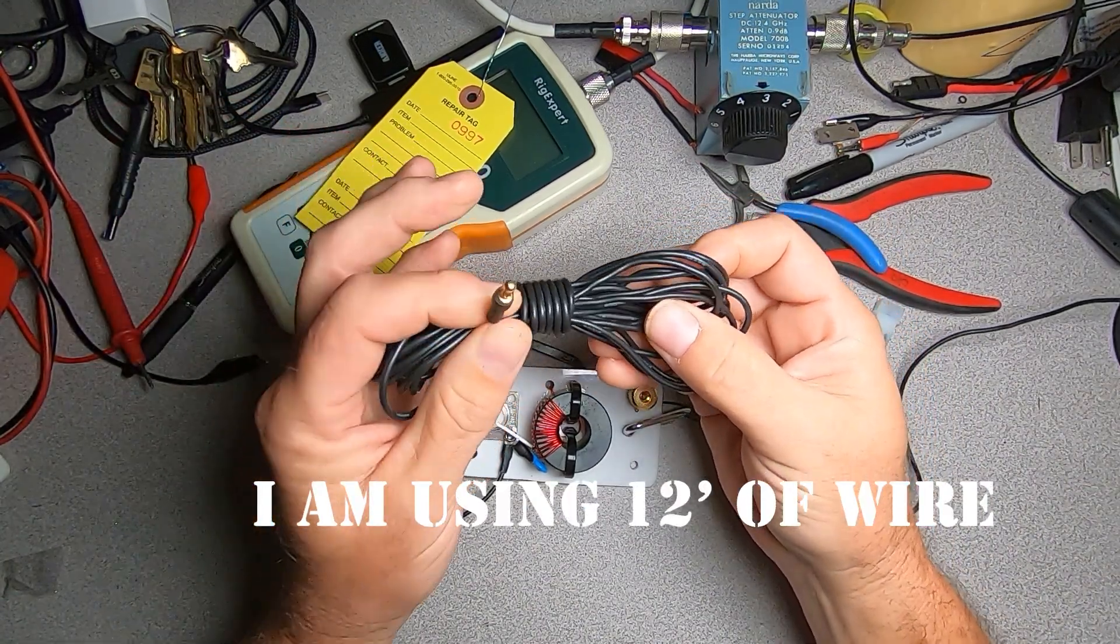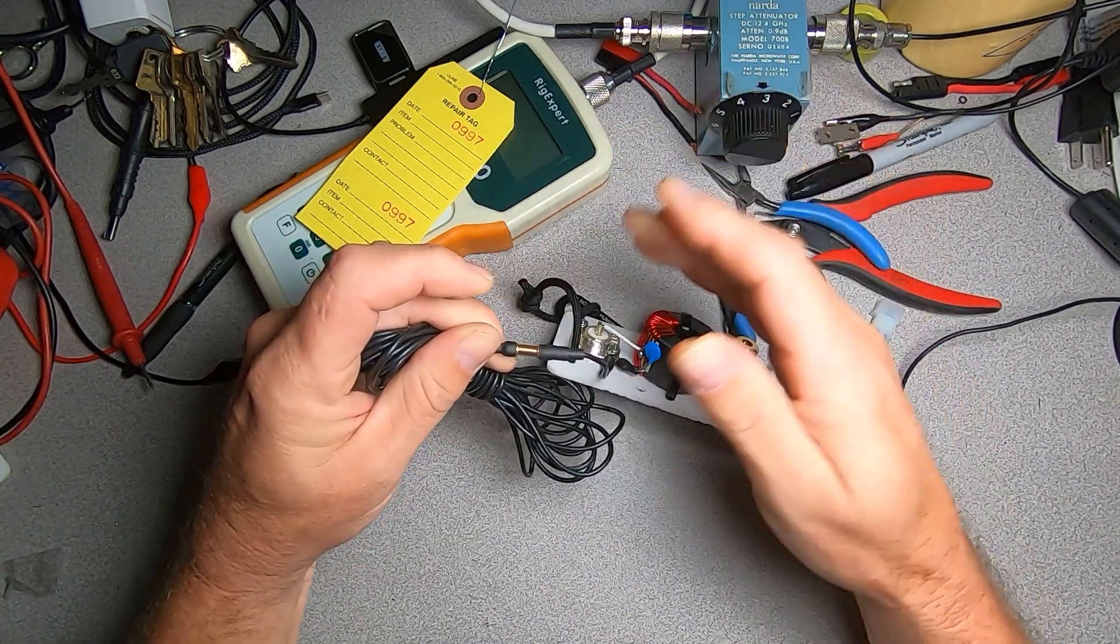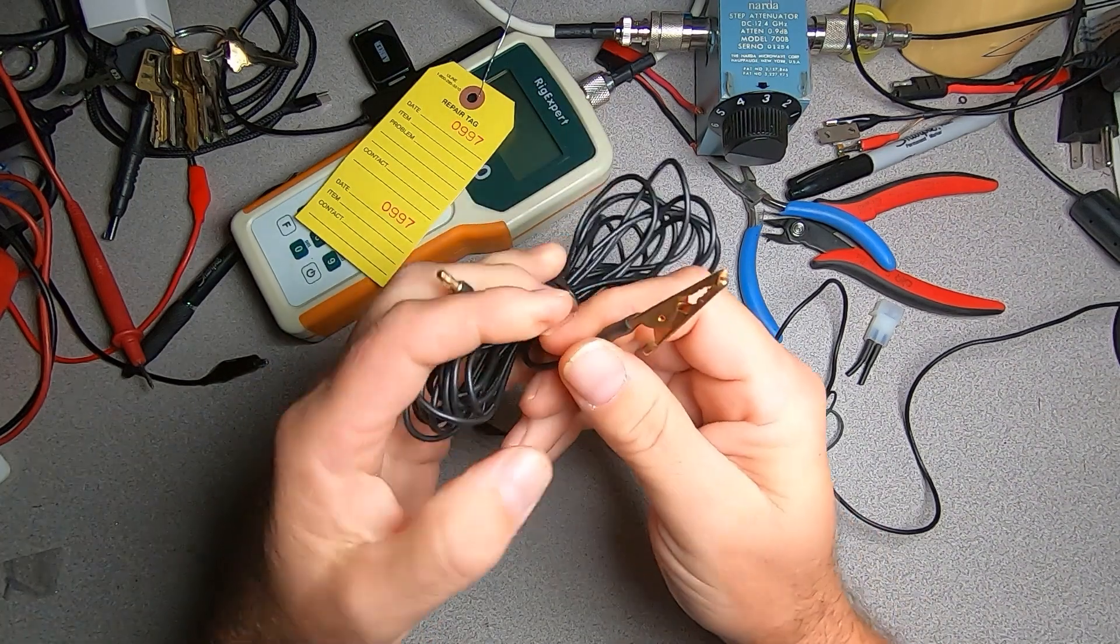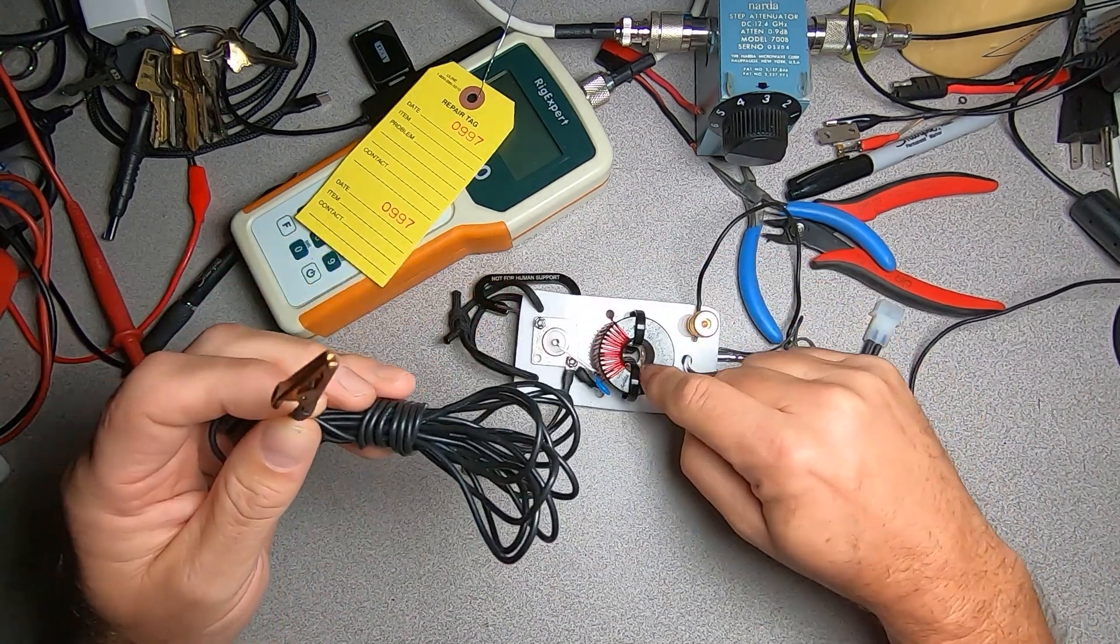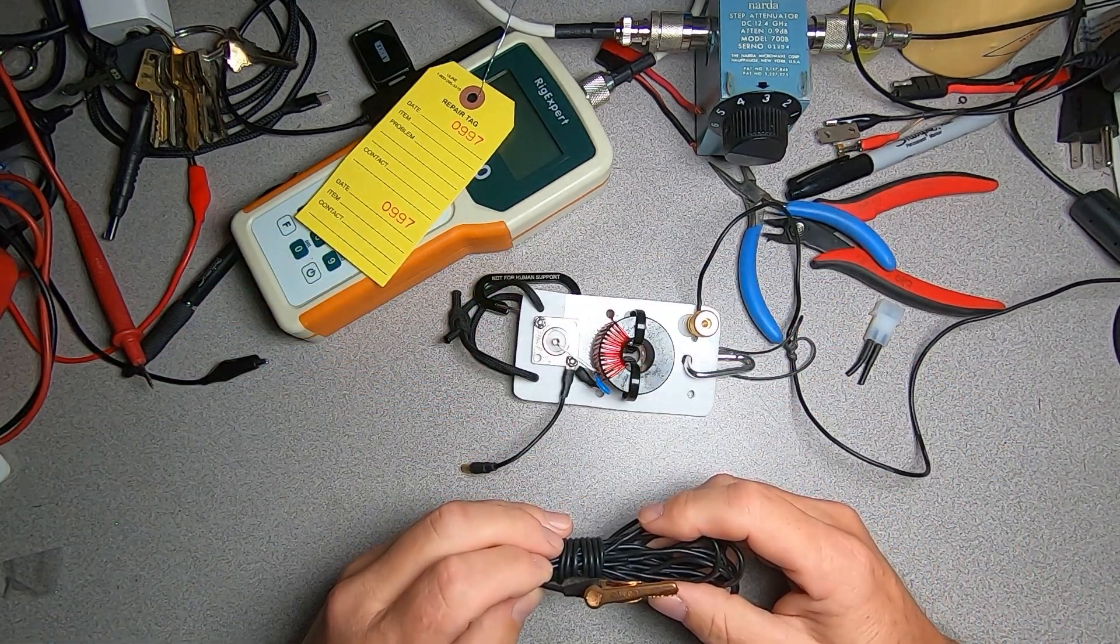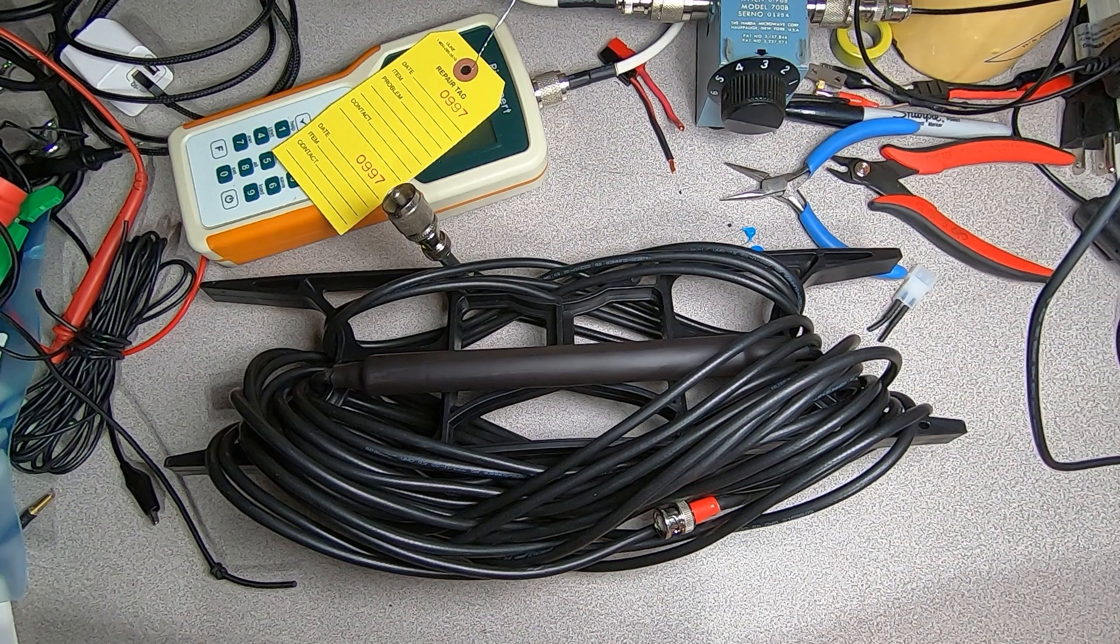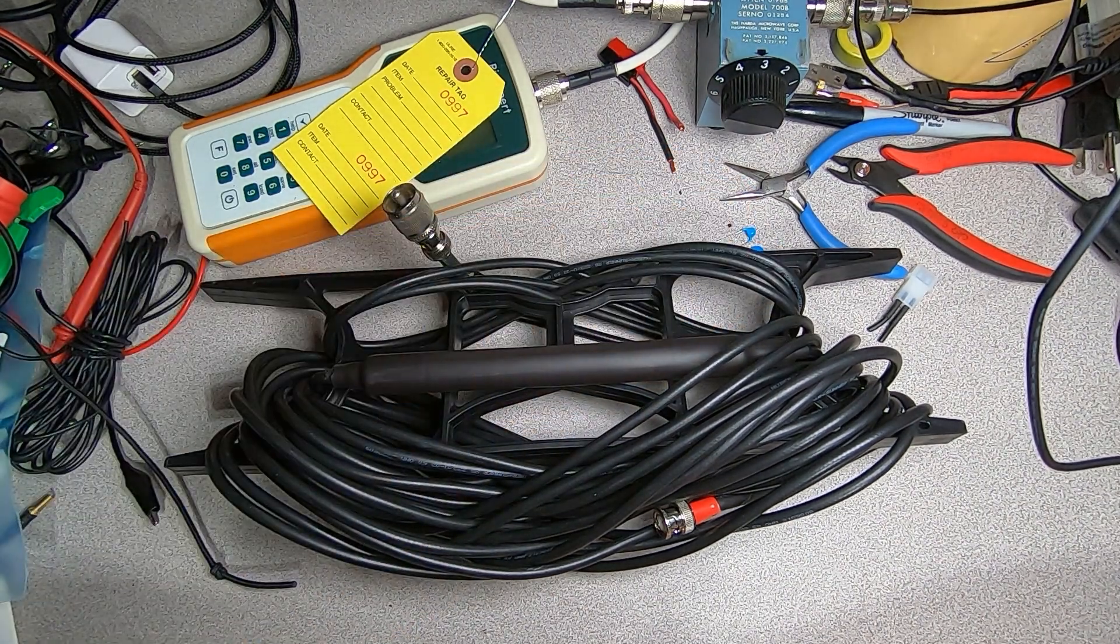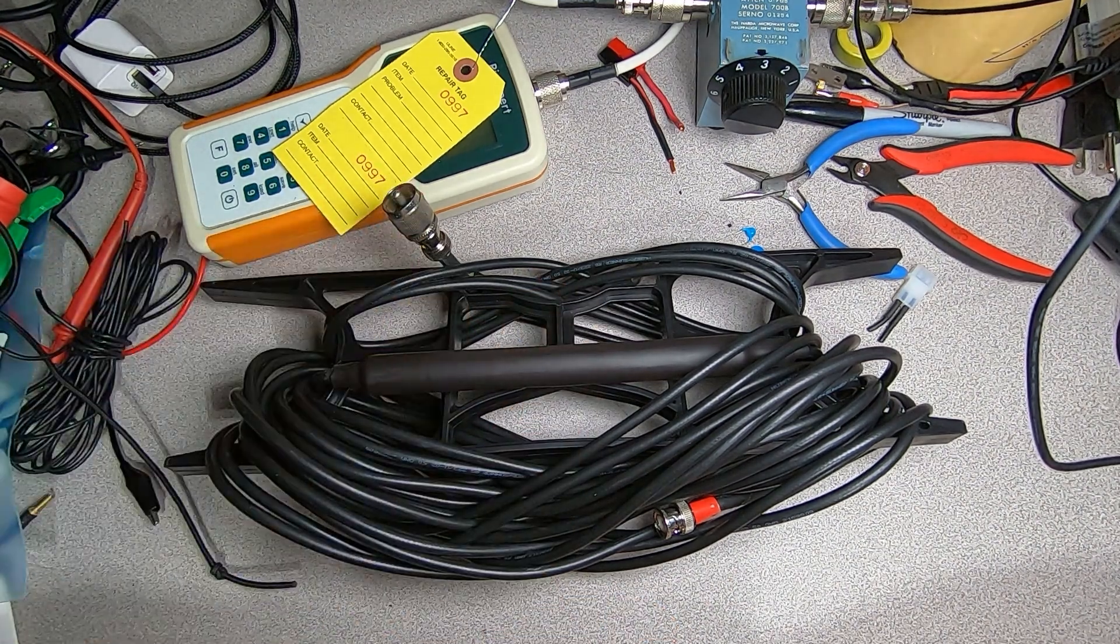Here's our counterpoise or return, whatever term you want to use. You can see we have the male version of the connector here and it just plugs in. I leave an alligator clip on the other end in case I want to clip it to a fence or something. This is what we're using in testing, set up in an elevated feed configuration. The feed line for testing is 50 feet of RG-223 with an integrated sleeve choke. I've done a video on this before - the choke is installed two meters away from the feed point of the antenna.